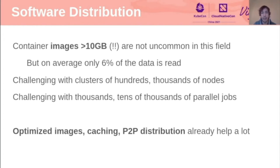So it's very inefficient to have to download the full image before starting your workload. If you think that these clusters can be huge — hundreds or thousands of nodes — then this problem is even bigger. You need to pull the images across all the nodes, and if the images are very large, this imposes huge pressure in terms of network and storage. Running thousands or tens of thousands of parallel jobs makes this problem even worse.